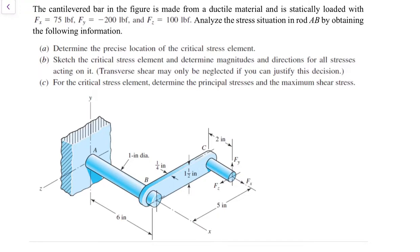It's a cantilevered bar or crankshaft made from ductile material, statically loaded in three directions: x, y, and z. We need to analyze the stress situation in rod AB by first determining the precise location of the critical stress element. Once we know where it is, we can combine normal stresses and shear stresses, then draw a critical stress element to develop a Mohr circle that gives us the principal stresses and maximum shear stress.